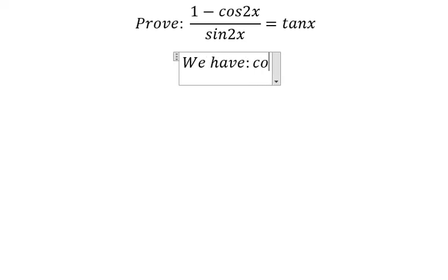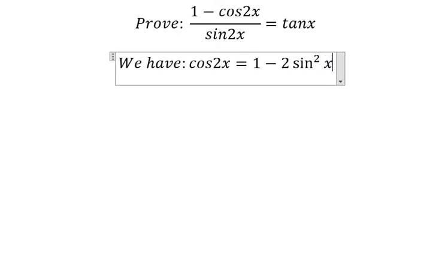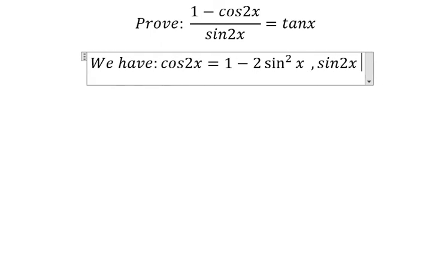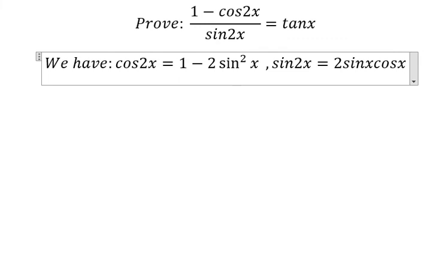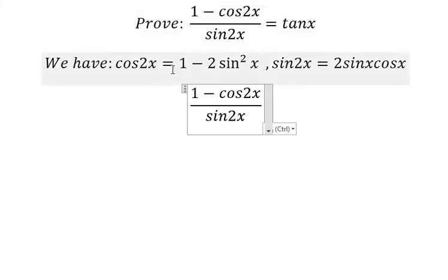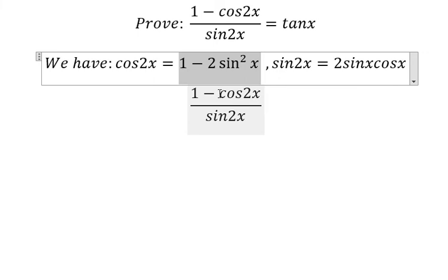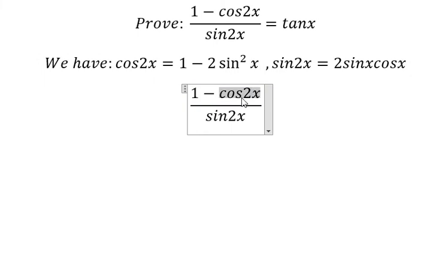That is about cosine 2x equals to 1 minus 2 sine squared x and the next one sine 2x equals to 2 sine x cosine x. So I need to put this one to change by cosine 2x.